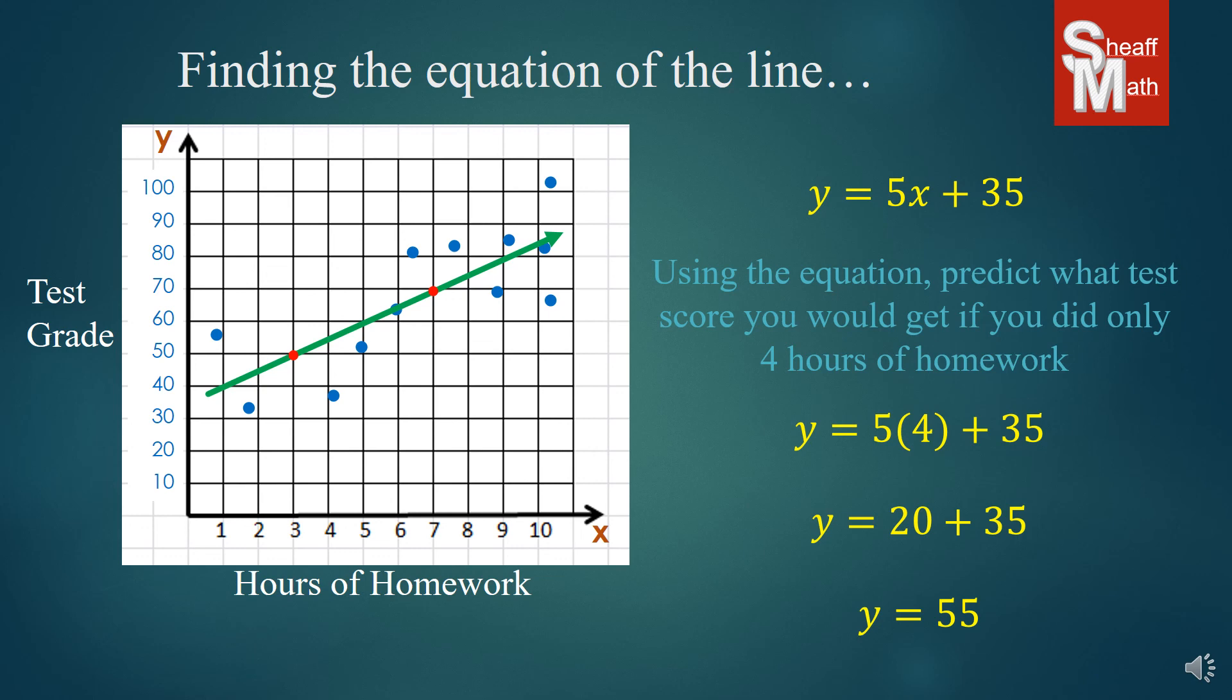And y equals 55. What does that mean in real life? Well, if you do four hours of homework, you can probably bet that you're going to get around a 55. It's not perfect, you might get higher, you might get lower, but the trend is saying that for four hours of homework, that's where you're probably going to be.